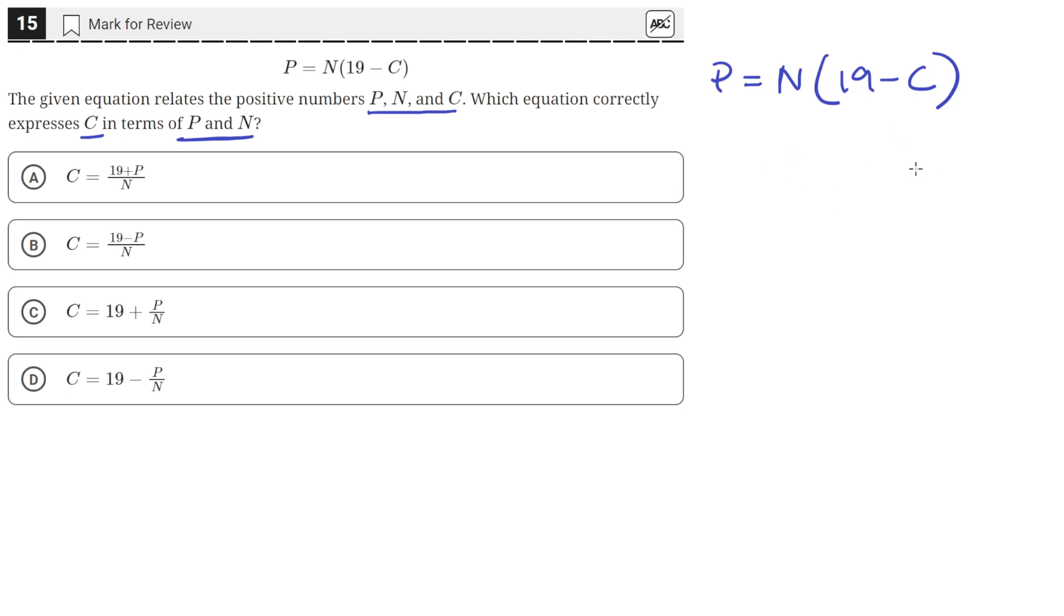So we can start by dividing both sides of the equation by N. And before we do that, we can look back at the problem statement, and it says that the values P, N, and C are all positive numbers, which means that P and N, C do not equal zero. This means we're allowed to divide by these variables because they're non-zero, because dividing by zero otherwise is not allowed.